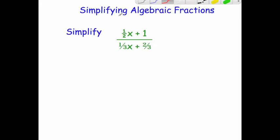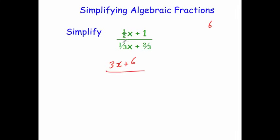Finally, this one is a bit tricky — there are fractions within the fraction. We've got a half x plus 1 over a third x plus 2 thirds. To cancel this down, I'm going to multiply both the top line and the bottom line by an integer to get integer coefficients of x. Because the denominators are 2 and 3, I'll choose 6 as a common multiple and multiply top and bottom by 6. A half times 6 is 3, so the top becomes 3x plus 6. A third times 6 is 2 and 2 thirds times 6 is 4, so the bottom becomes 2x plus 4.